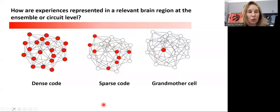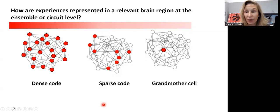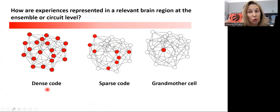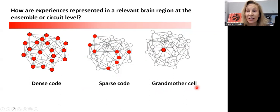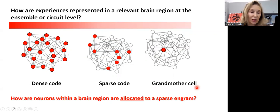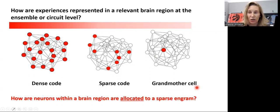My first question was: how are experiences and how is memory represented in relevant brain regions at the circuit or neuronal ensemble level? It could range from a very dense code where every single neuron is engaged, all the way to a very sparse code — very much like a grandmother cell. Many studies suggest that it is a sparse code. So how are neurons within a brain region allocated or recruited to this sparse engram?